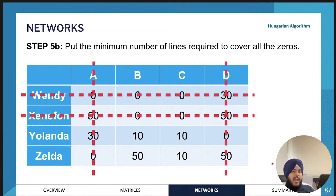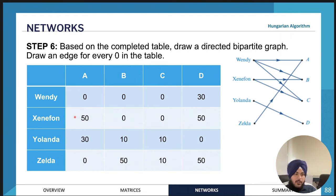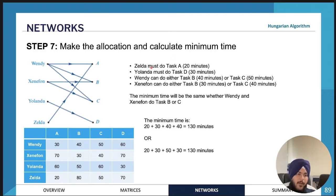Now if you draw the minimum number of lines it will be four, meaning you're done with the Hungarian algorithm. The zeros indicate the tasks each person can perform in the minimum amount of time. Wendy can do tasks A, B, and C in minimum time; Xenophon can do tasks B and C; Yolanda can do task D; and Zelda can only do task A. Drawing a bipartite graph here is very helpful. Since Zelda can only do task A, she must be allocated to task A — that's 20 minutes from the original table.